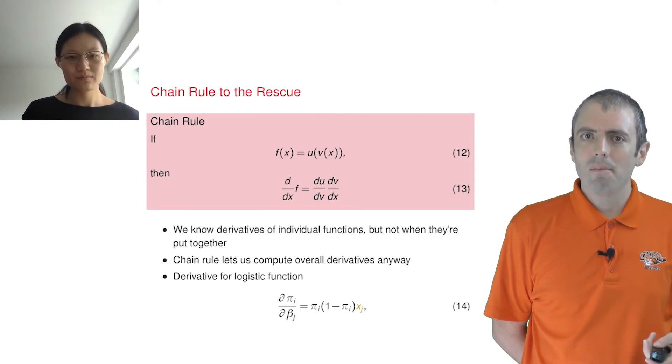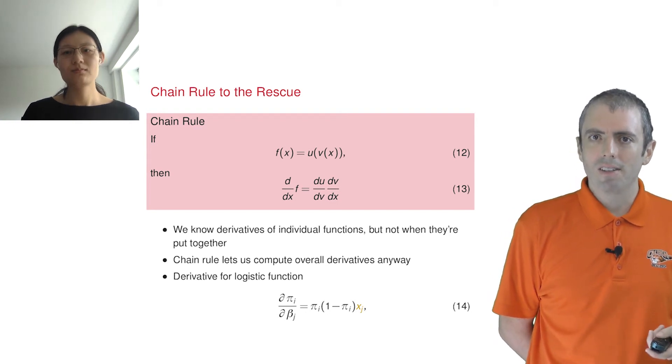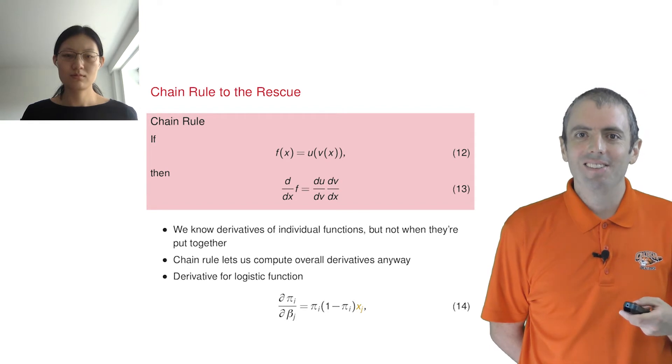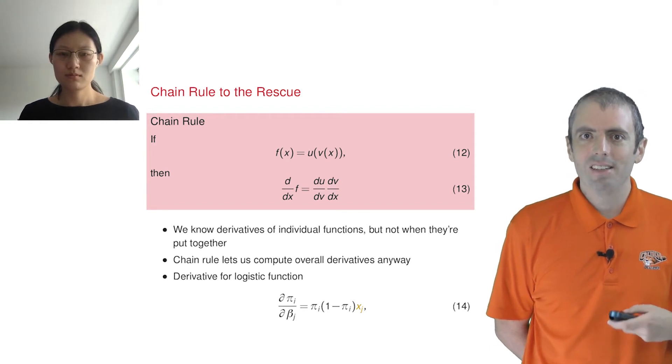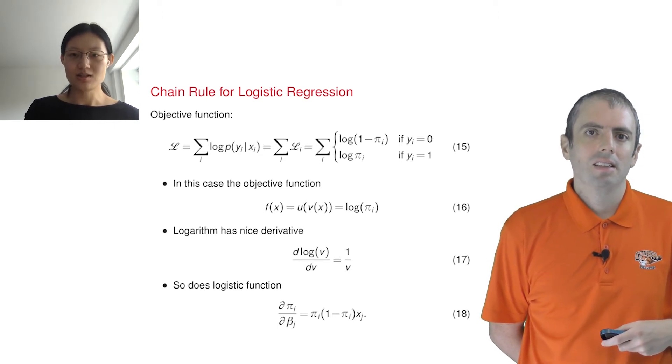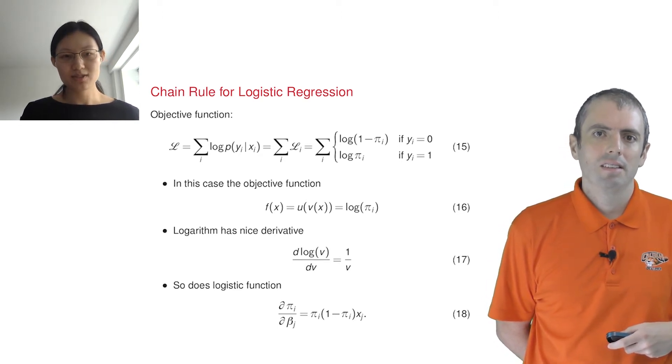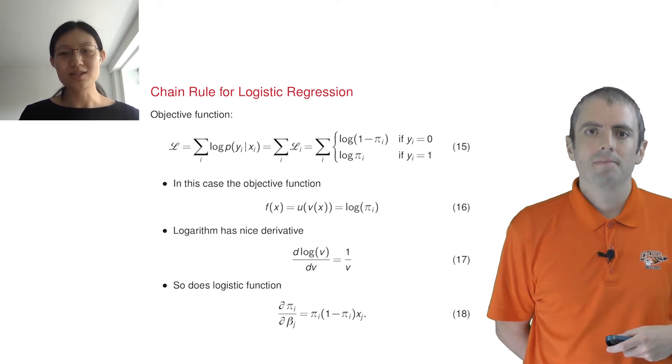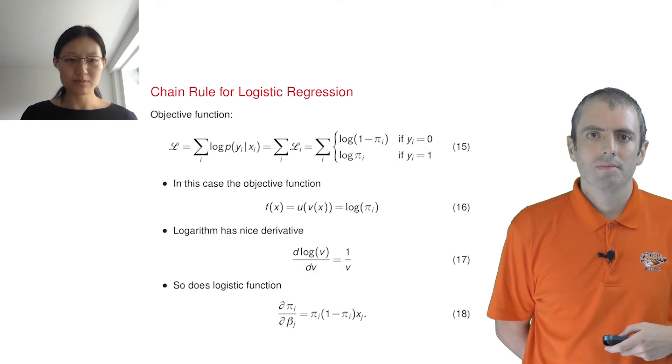Our objective function is the composition of log and the logistic function. Luckily, I remember that the derivative of the log function is one over v. Right. The one last thing we need is that the derivative of a sum is the sum of the individual derivatives. That's another reason we turn the product of individual probabilities into the sum of log probabilities.